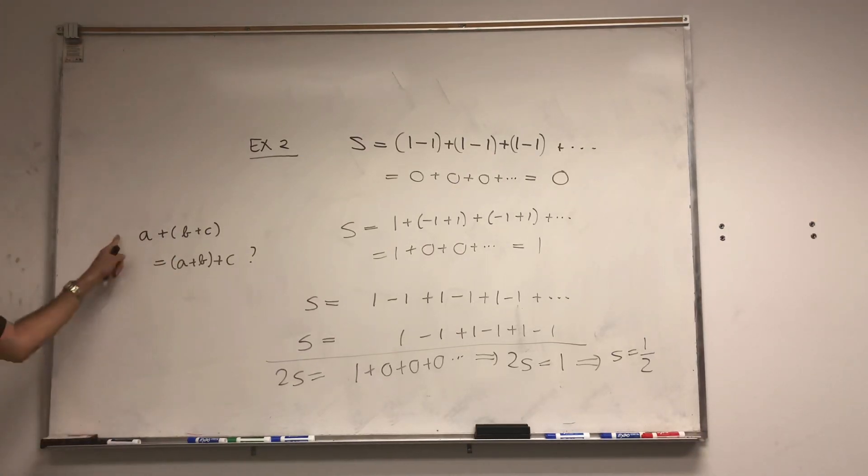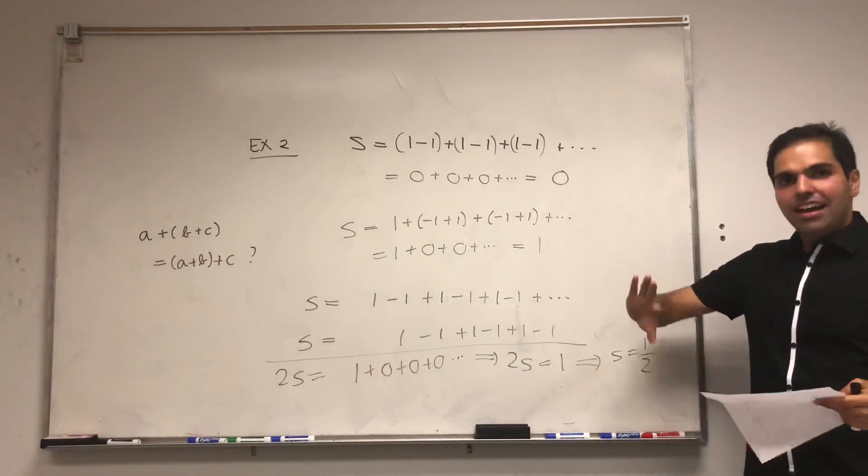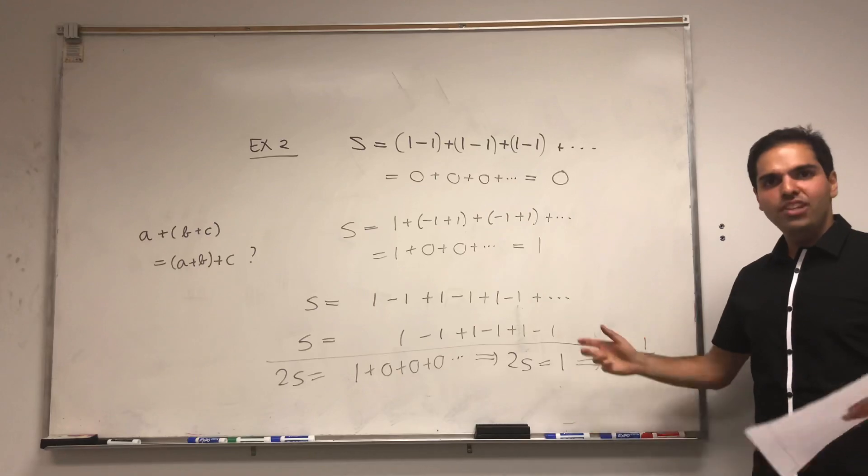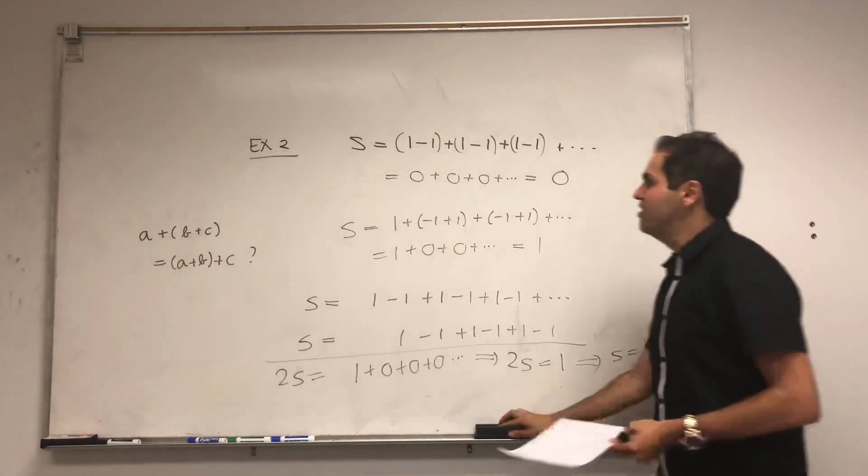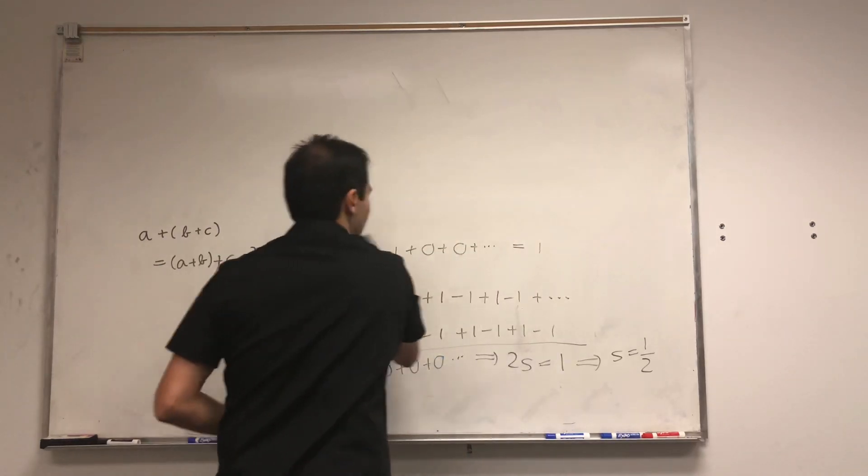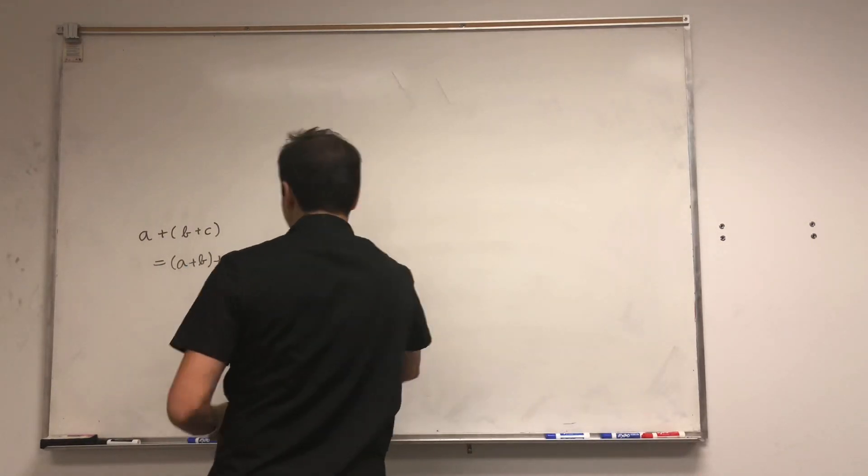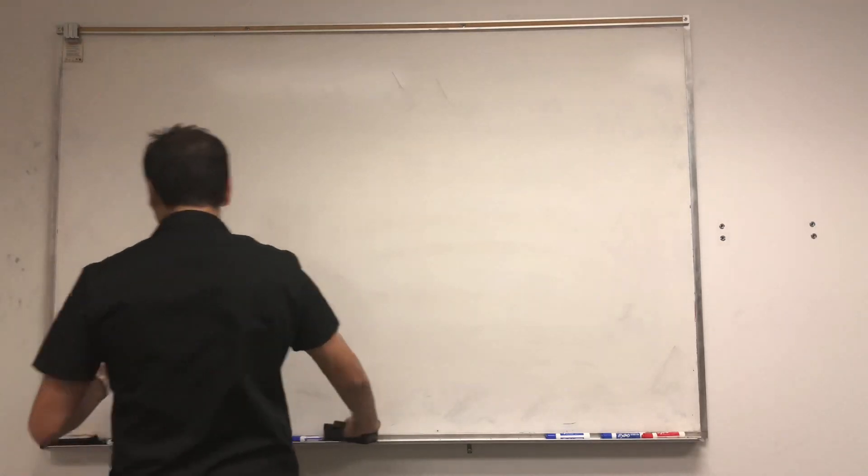So be careful of arithmetic when you deal with infinite series. Lastly, I want to show you that you can't even rearrange infinite series. And this is also a very cool example. So that was an associativity problem. Now let me talk about commutativity.